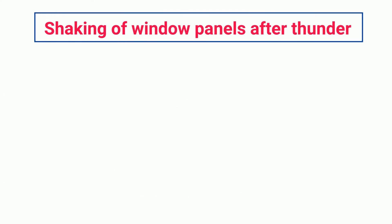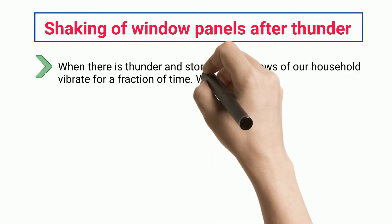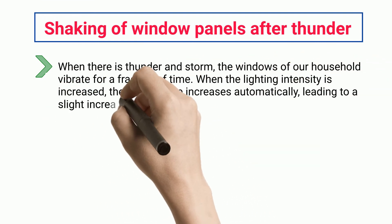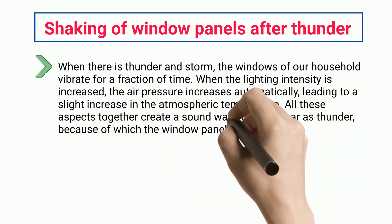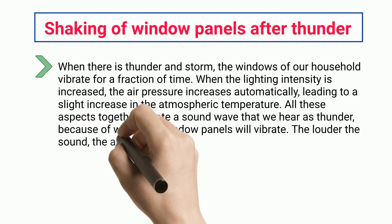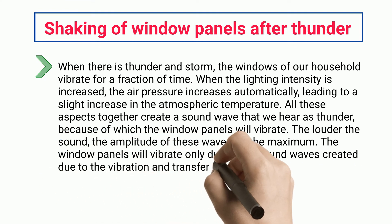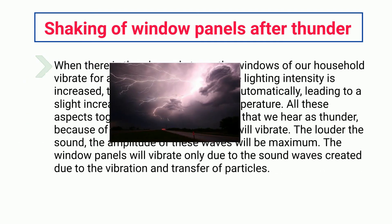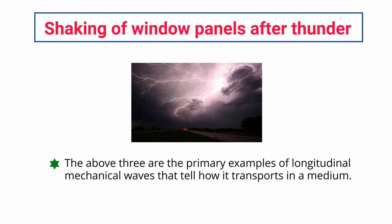Shaking of window panels after thunder: when there is thunder and storm, the windows of our household vibrate for a fraction of time. When the lighting intensity is increased, the air pressure increases automatically, leading to a slight increase in the atmospheric temperature. All these aspects together create a sound wave that we hear as thunder, because of which the window panels will vibrate. The louder the sound, the greater the amplitude of these waves. The window panels vibrate only due to the sound waves created by the vibration and transfer of particles. These three are the primary examples of longitudinal mechanical waves that show how they transport in a medium.